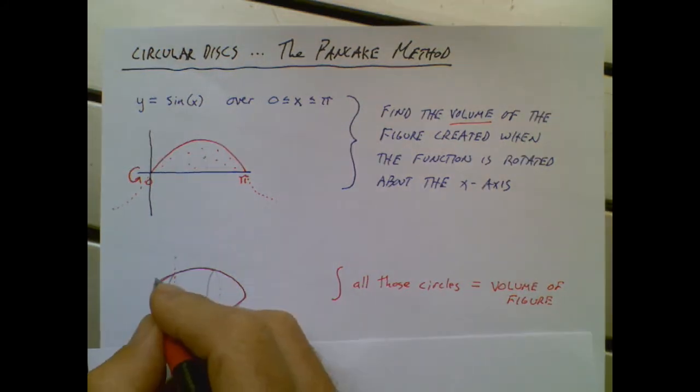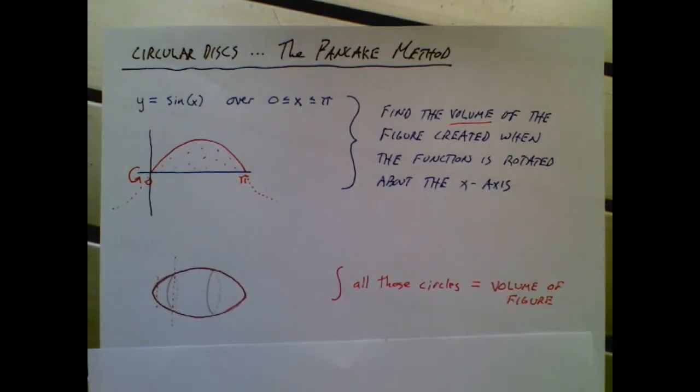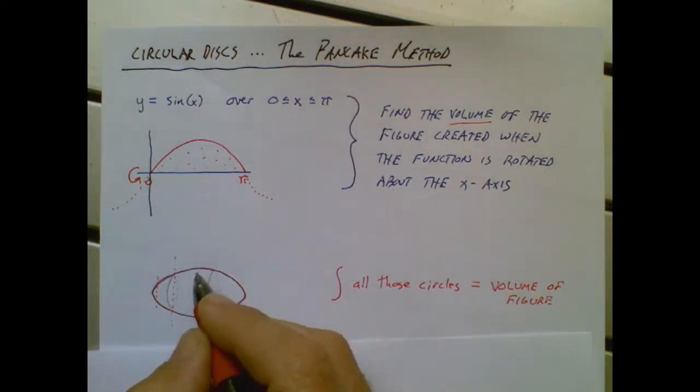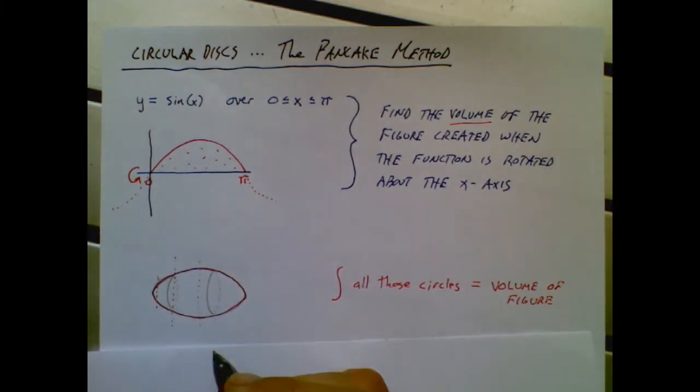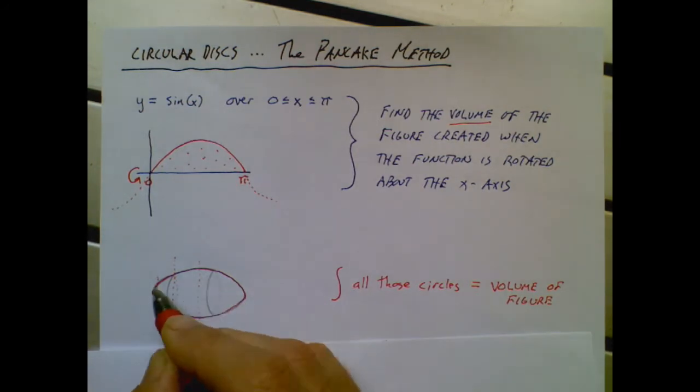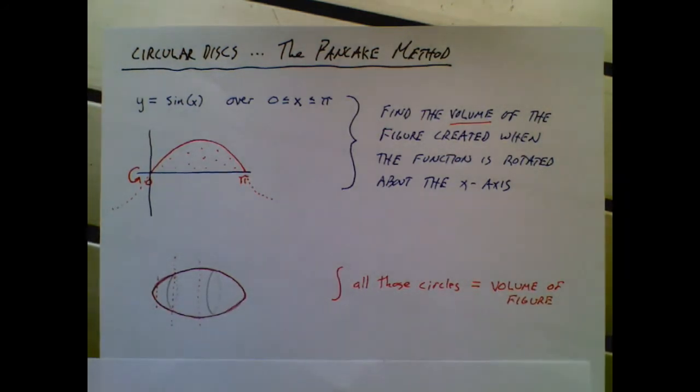If you did a slice right here, it would also be a perfect circle, it would just be really tiny. If you did a slice right here, it would be slightly larger than this slice. And with a good imagination, and maybe the help of my drawing here, you can see that this football is actually made up of a whole bunch of circles placed right next to each other.